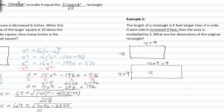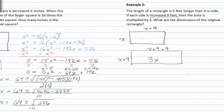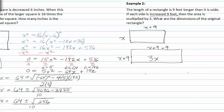The new area is three times the first area. From here, we can write our equations. If we know the area of the first rectangle is x plus nine times x, and we know that this one is three times that size, we should multiply this whole thing by three, and that will equal x plus nine times x plus eighteen, which are the sides of the bigger rectangle.